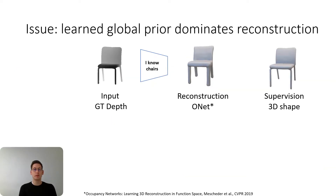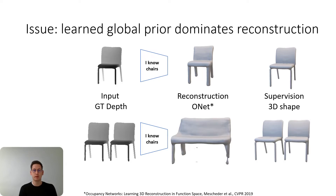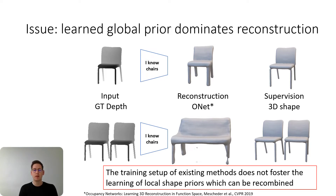Reconstruction networks work really well if the observation at inference and the prior learned during training are similar — here a network has seen chairs during training and is now evaluated on a chair. However, if the observation at inference is not similar to the prior learned during training, as is typically the case for novel classes or for a new arrangement of two chairs, then the global prior from training dominates the reconstruction. This results in the two chairs being reconstructed more as a bench than two chairs because the global prior with four legs has dominated. This clearly demonstrates that the training setup of existing methods does not foster the learning of local shape priors which can be recombined.